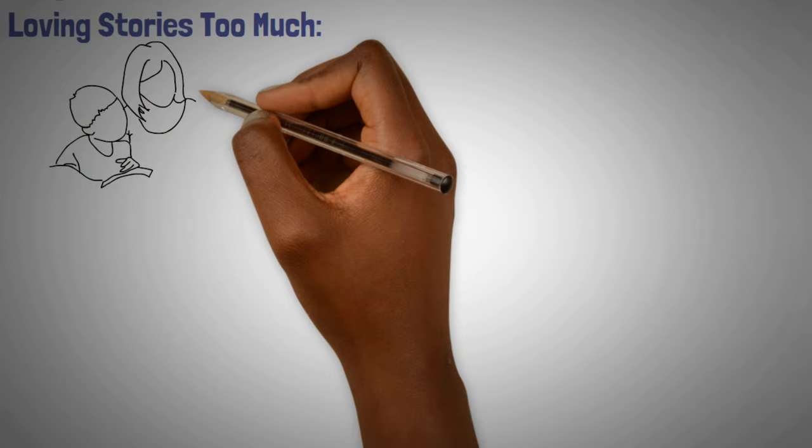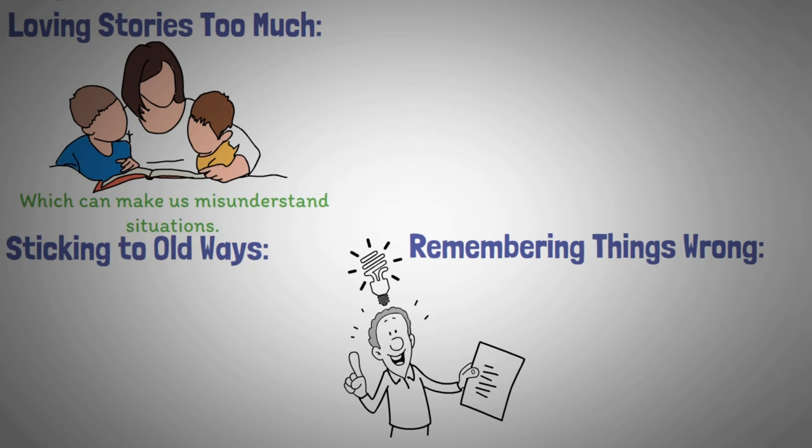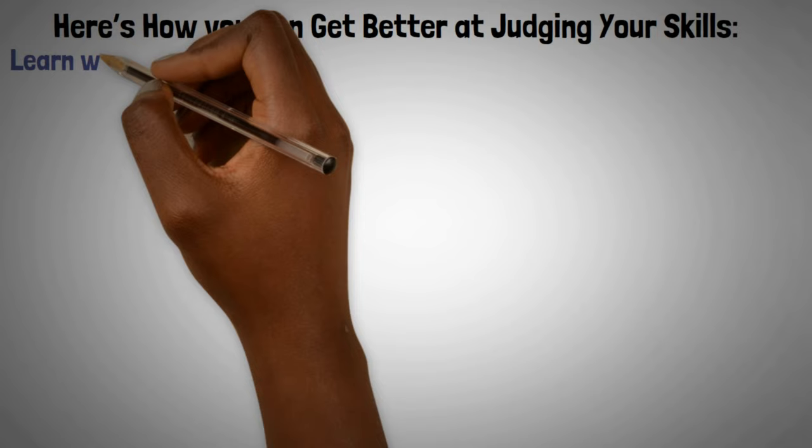Loving stories too much. We love stories that make sense of things even if they're not true, which can make us misunderstand situations. Remembering things wrong. Sometimes we remember things that didn't happen or remember them differently. Sticking to old ways. We might stick to a familiar way of doing things even when a new way is needed. And finally, not knowing we don't know. Sometimes we think we're better at something than we really are.